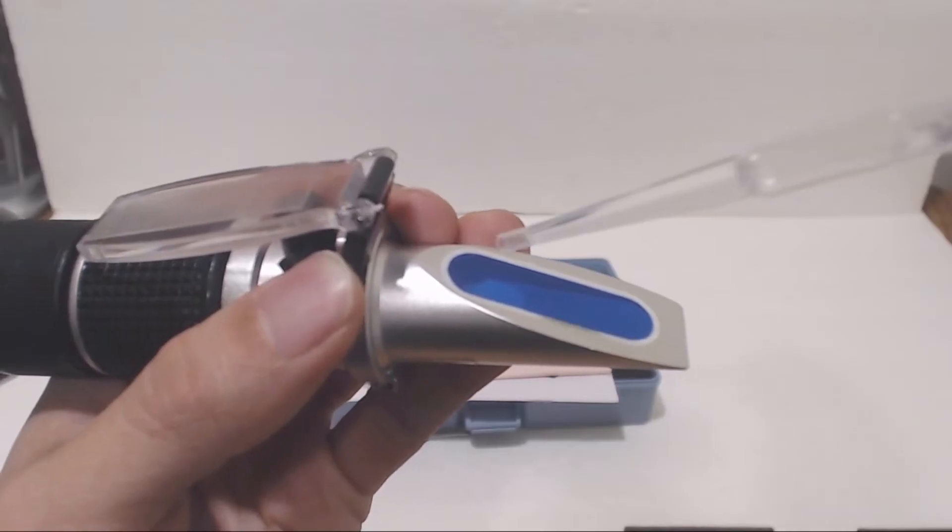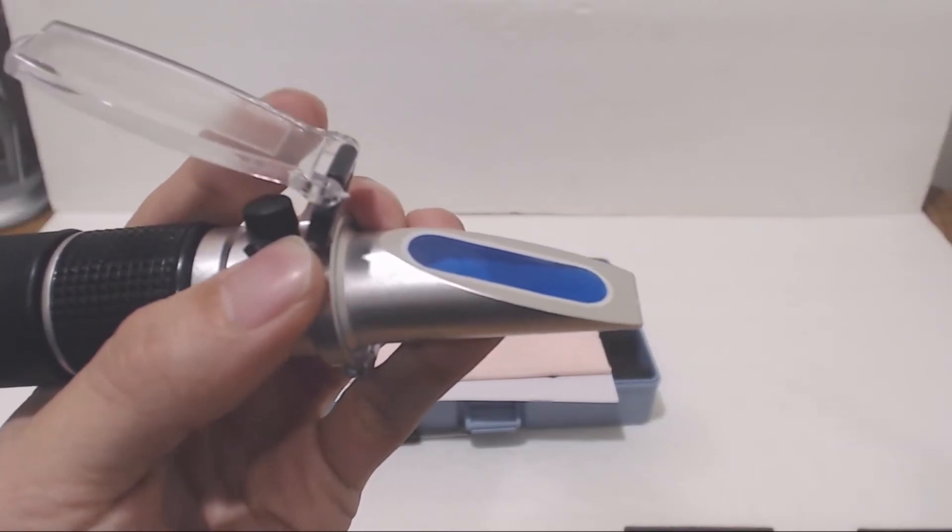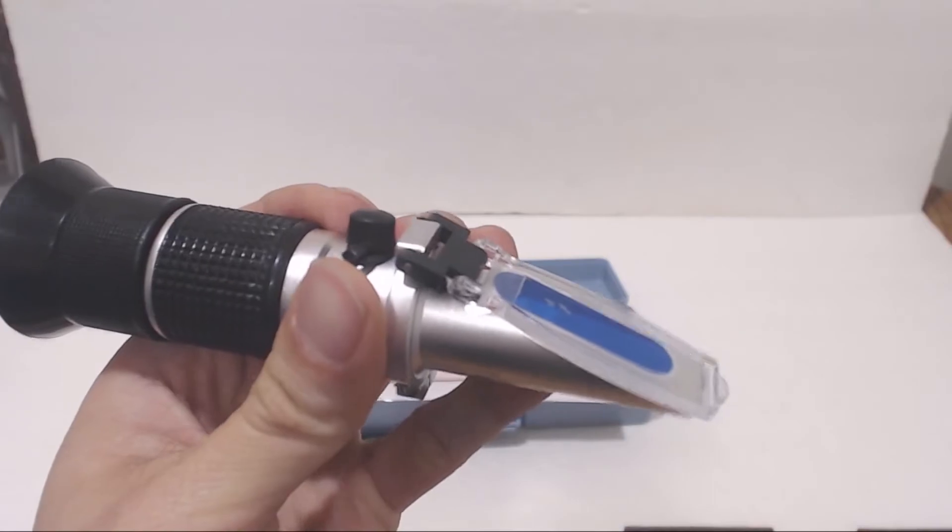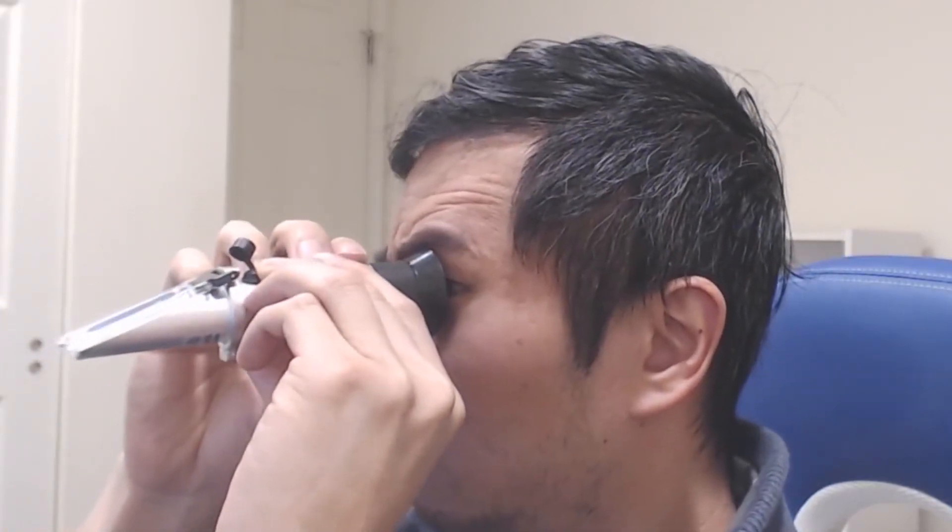To use the refractometer, place a couple of drops of the sample directly onto the prism, then close the plate to flatten the sample out and remove any air bubbles. Hold the prism end up to the light and look into the eyepiece. If the scale looks blurry, rotate the eye cup to focus until you can read the scale.